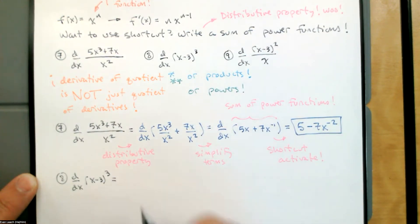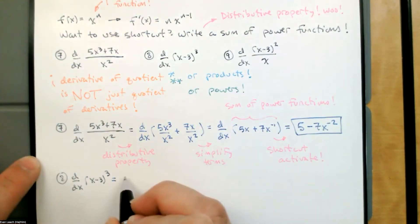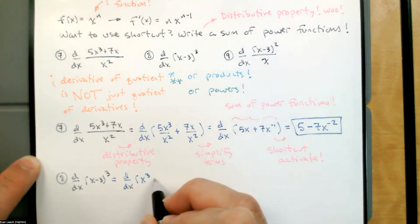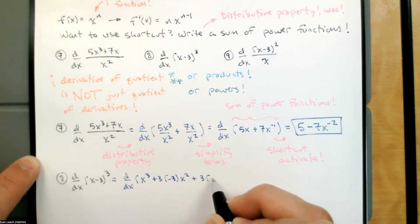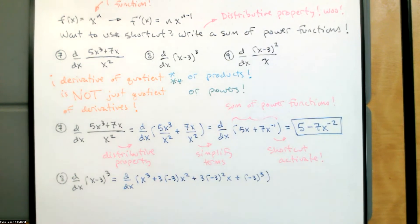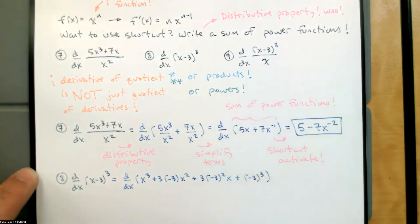All we have is our shortcuts: multiply by the exponents, subtract 1 from the exponents. So I'm going to write this as a sum of power functions. This is the derivative of x cubed plus 3 times negative 3 times x squared plus 3 times negative 3 squared times x plus negative 3 cubed. I could write out three copies and start multiplying, or I could apply some binomial knowledge. The coefficients are 1, 3, 3, 1. The powers of x go 3, 2, 1, 0 and the powers of negative 3 go 0, 1, 2, 3. So I even applied a shortcut on my distributive property.